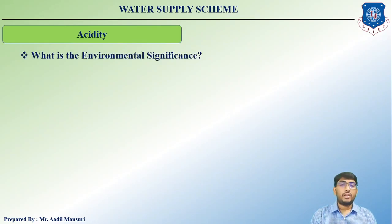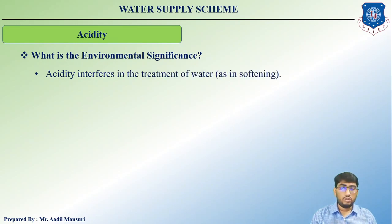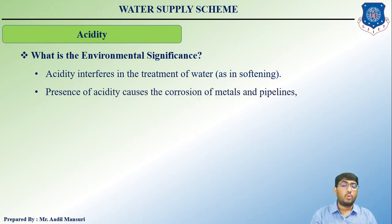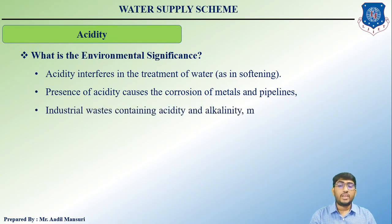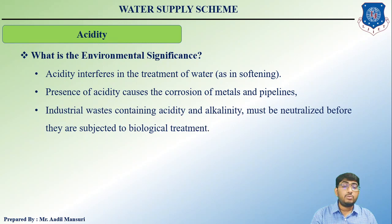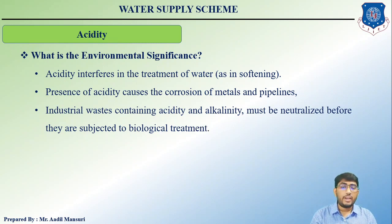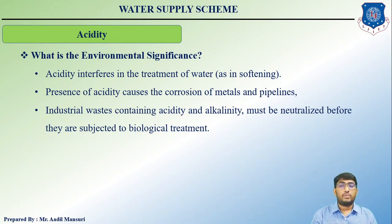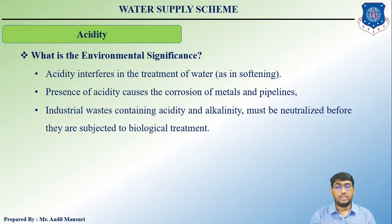Regarding the environmental significance of acidity: it interferes with water treatment processes such as softening. The presence of acidity causes corrosion of metals and pipelines. Industrial waste containing acidity and alkalinity must be neutralized before being subjected to any biological treatment, since extreme pH values hinder biological activity.